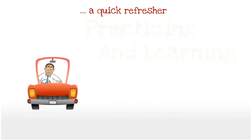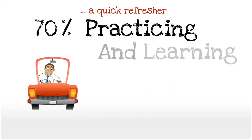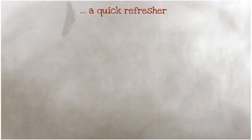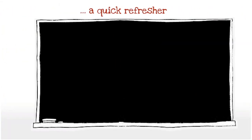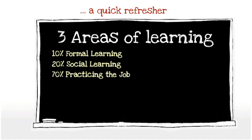And 70% has come from practising, learning how to drive, making some mistakes and learning from that. So in essence, the marketplace has pretty much adopted the view that there are those three areas of learning: formal learning, social learning, and practise on the job.